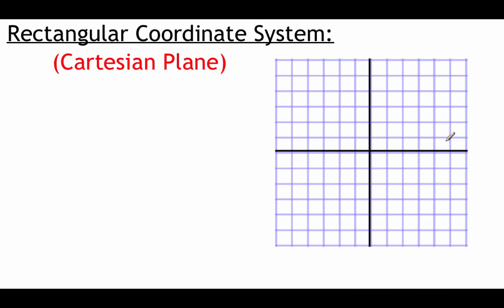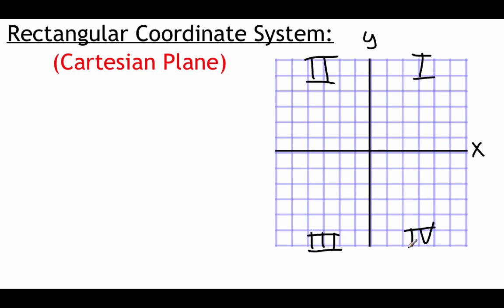On the right-hand side of the screen I've got a picture of our rectangular coordinate grid, also known as the Cartesian plane. The first thing I want you to notice are the two axes. We've got an x-axis which runs horizontally, left and right. And then we've got a y-axis which runs vertically. These two axes split our grid into four distinct pieces called quadrants. We always start naming them in the top right-hand corner — that's quadrant one — and then work counterclockwise. So top left is quadrant two, bottom left is quadrant three, and bottom right is quadrant four.